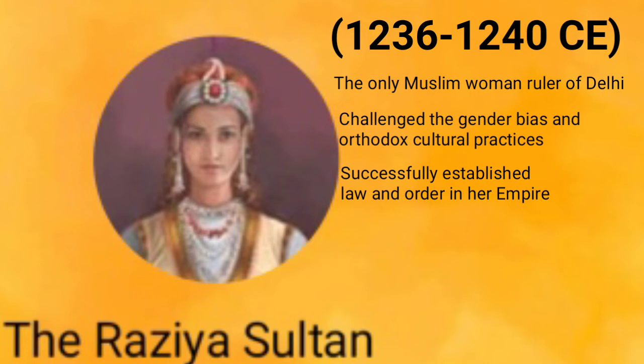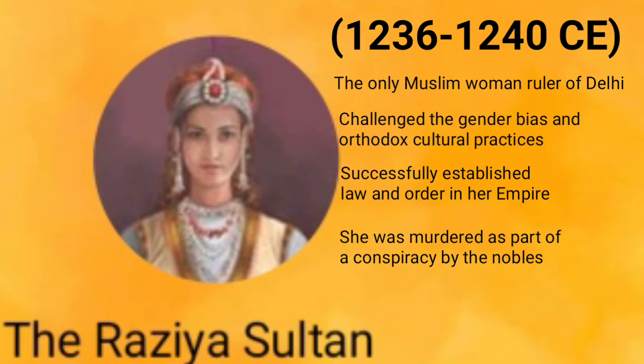In the beginning of her rule, there was a struggle between Razia and the Chahalgani, the group of 40 nobles established by her father Iltutmish. They revolted against her because they opposed a female monarch, and were also disappointed by her decision of granting a high position to the Ethiopian slave Yakut. In this conspiracy, she was murdered by the nobles when she was on her way to reclaim her empire.